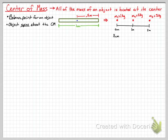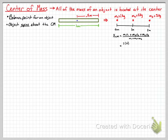Once we have our distances and the mass of each object, we can find the location of the center of mass. We do that by taking the mass and position of each object and adding them together: mass 1 times position 1, plus mass 2 times position 2, plus mass 3 times position 3, all divided by the total effective mass, which is mass 1 plus mass 2 plus mass 3.